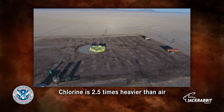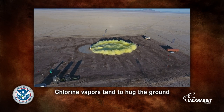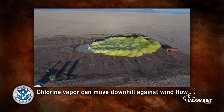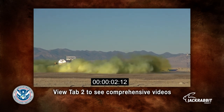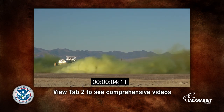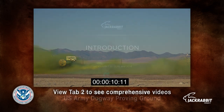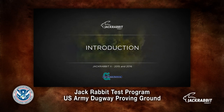Chlorine is two and a half times heavier than air. These tests show that the vapors tend to hug the ground, even moving downhill against wind flow. Responders should review this new data so that topography in the release area is considered as well as wind direction when determining an access route and location of the command center. This training should provide emergency responders information that will not only keep them safe, but will help protect the public as well.